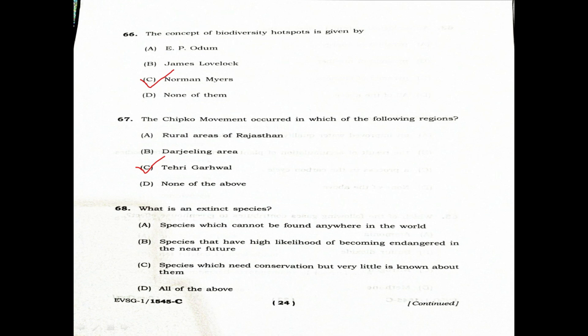Question 68: What is an extinct species? Option A: Species which cannot be found anywhere in the world. Option B: Species that have a high likelihood of becoming endangered in the near future. Option C: Species which need conservation but very little is known about them. Option D: All of the above. The correct answer is Option A — species which cannot be found anywhere in the world.